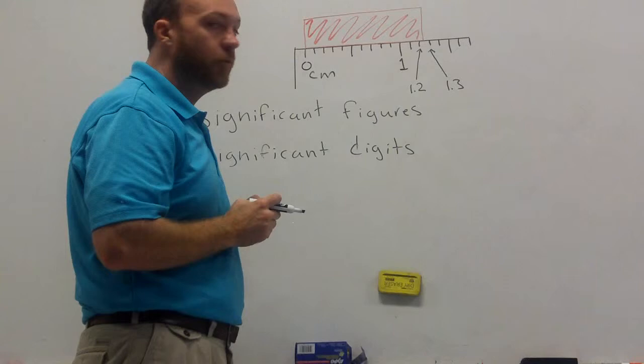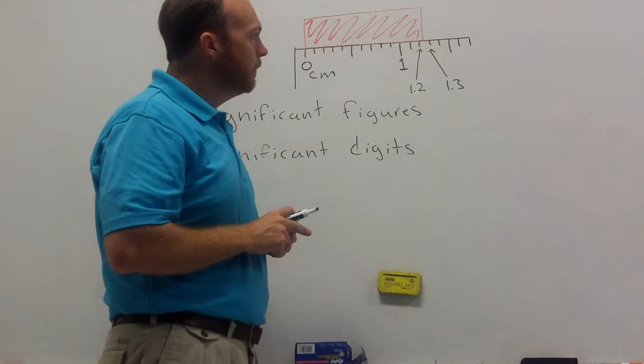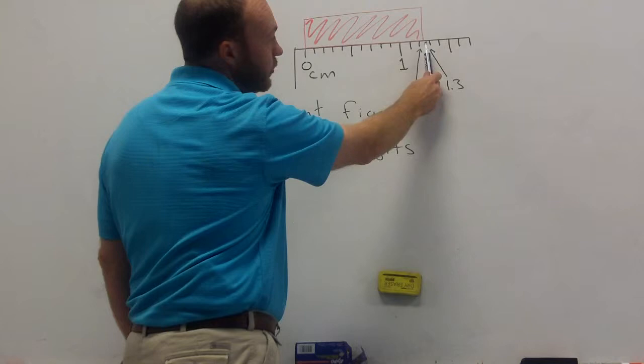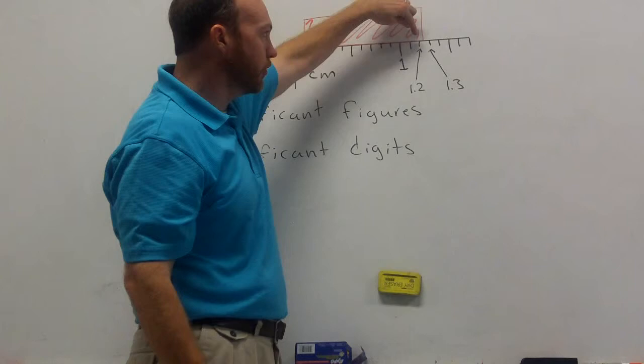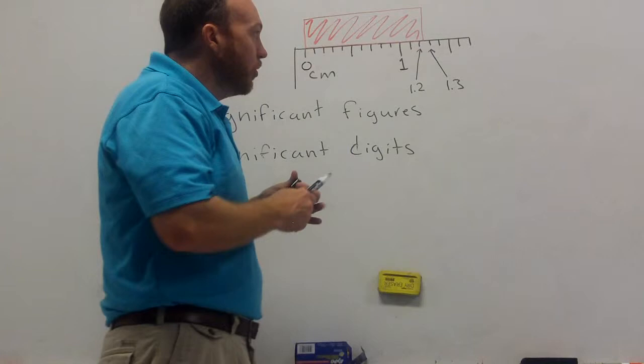Now, halfway between 1.2 and 1.3 is 1.25. A lot of people may look at this and immediately guess that. But I want you to look at our object. Our object, while it is in between 1.2 and 1.3, it's not exactly halfway. And I hope that you can see it's a little bit closer to 1.2 than it is to 1.3.